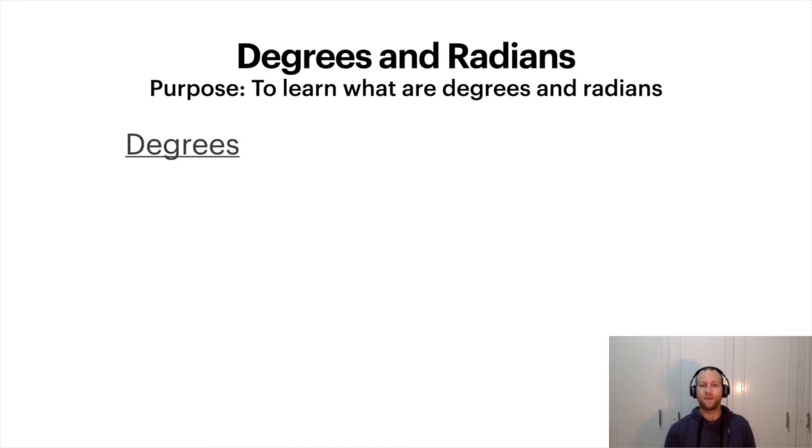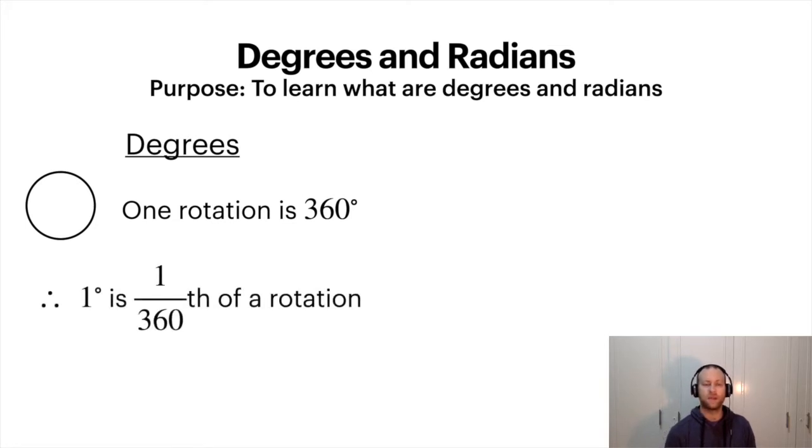Degrees and radians. What are the differences? Degrees is probably the one that you know the most. So in one rotation around a circle, you've got 360 degrees. So what that means is one degree is one 360th of a rotation. So you add all the rotations up, you have one full rotation.